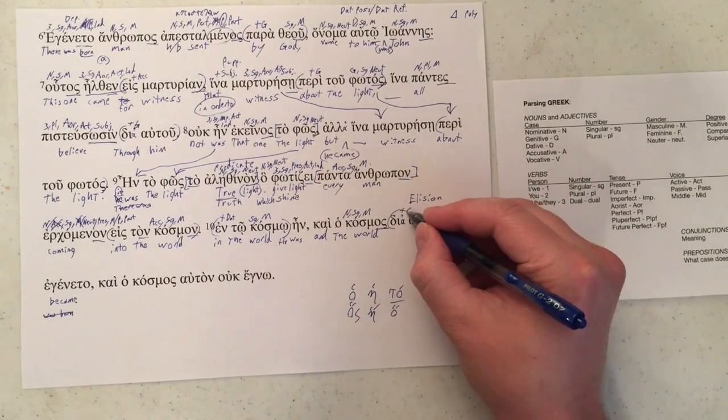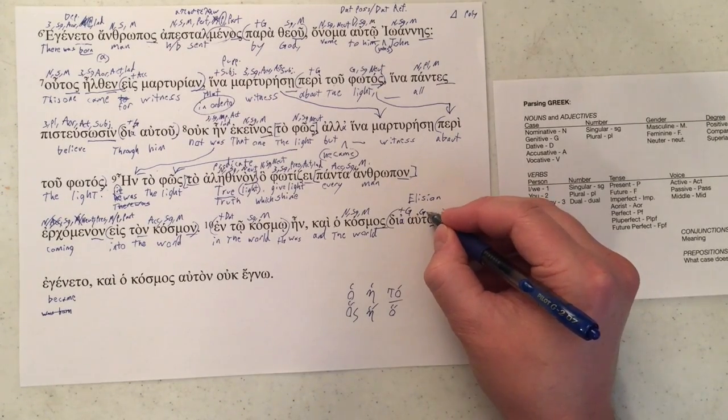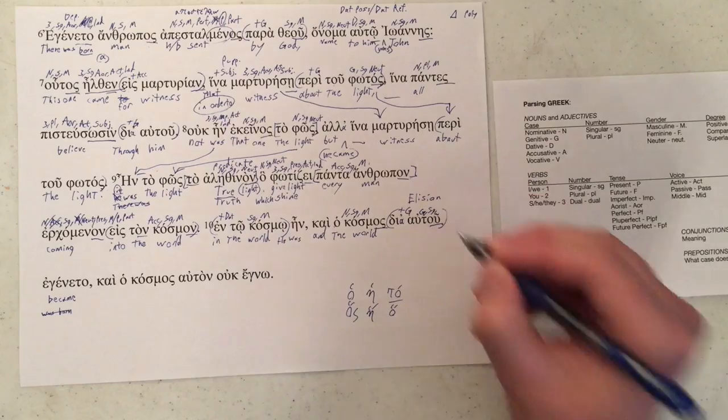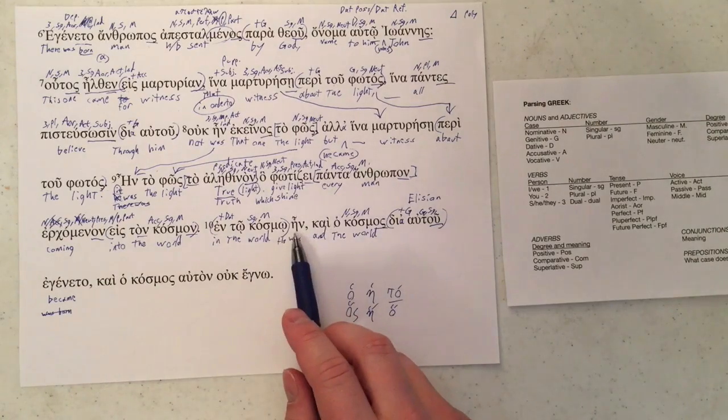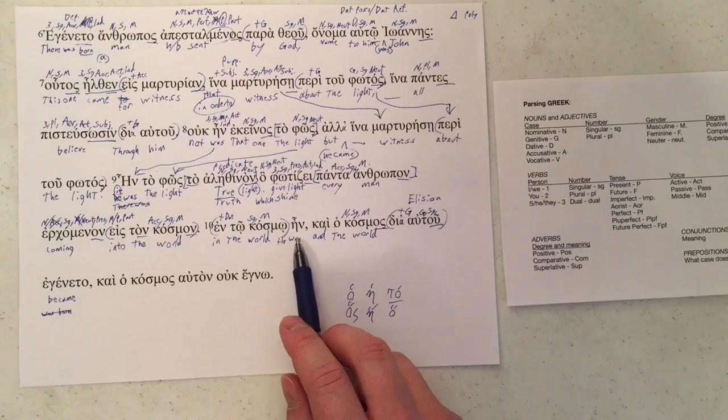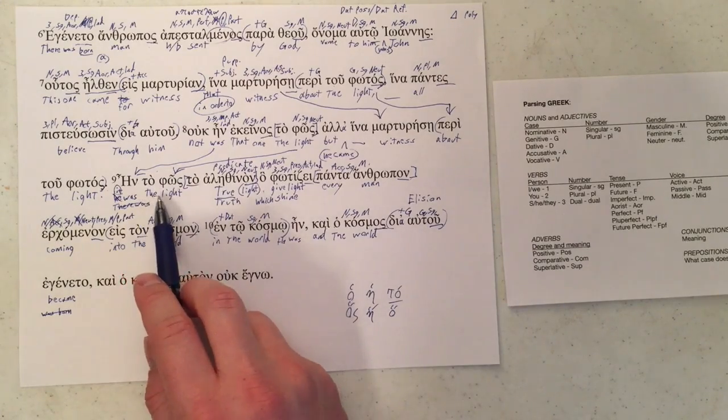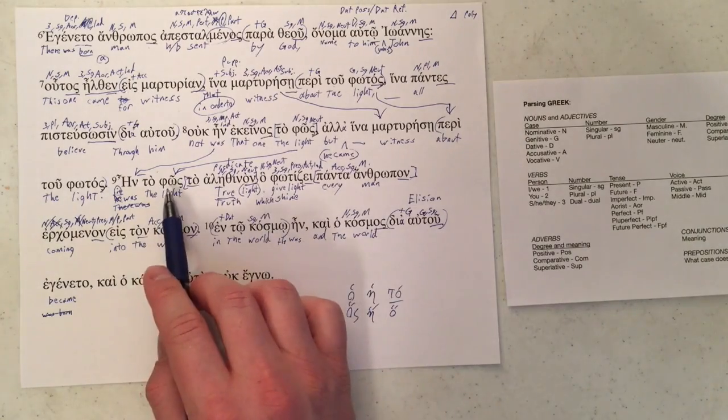This one is going to take the genitive case because we've got u here. That's going to be genitive and singular. But what is the gender of this word? Well, we have to look back to something else. And that's going to be the subject of ein here. What was the subject of ein? Why, that's to phos. Going back to erchomenon, ho, and then to phos.